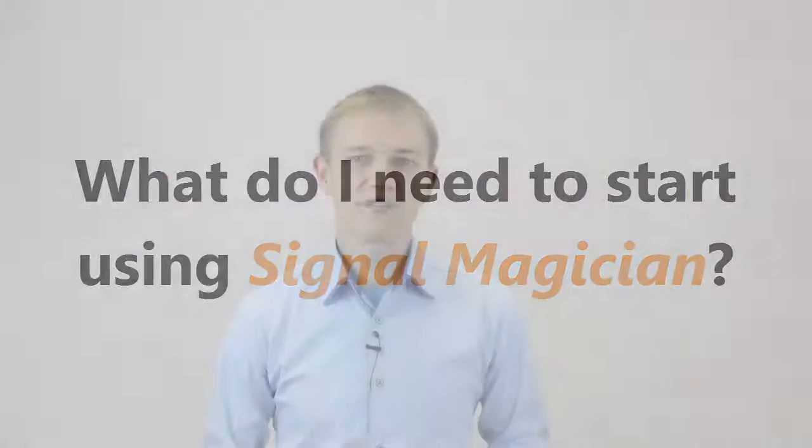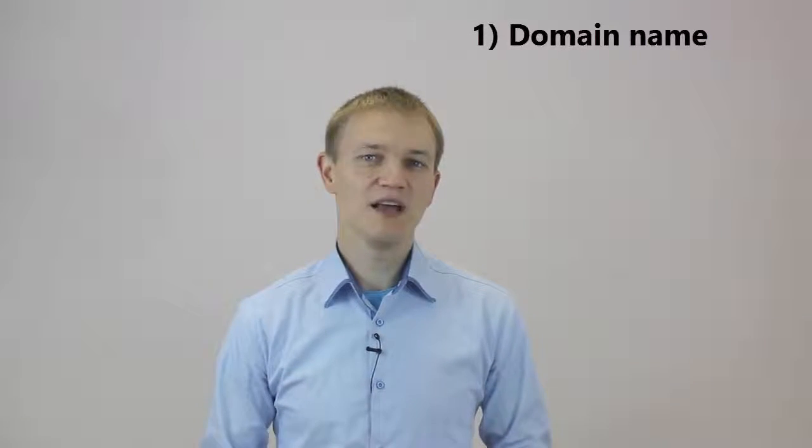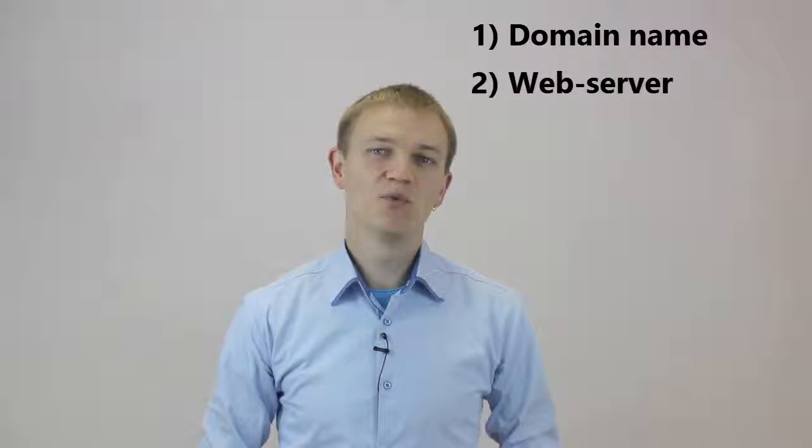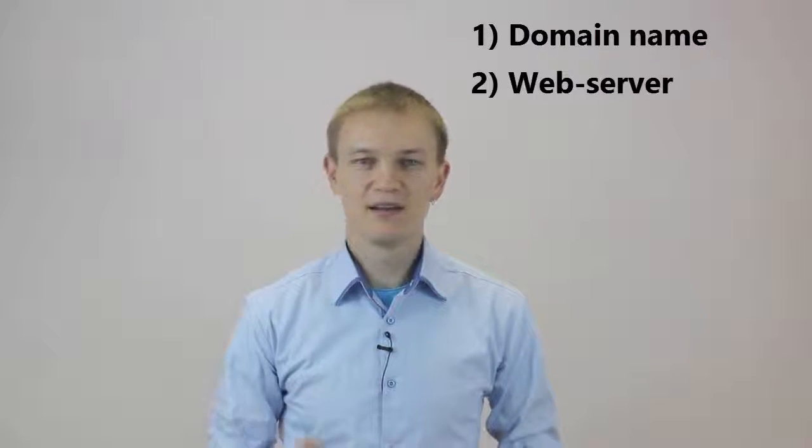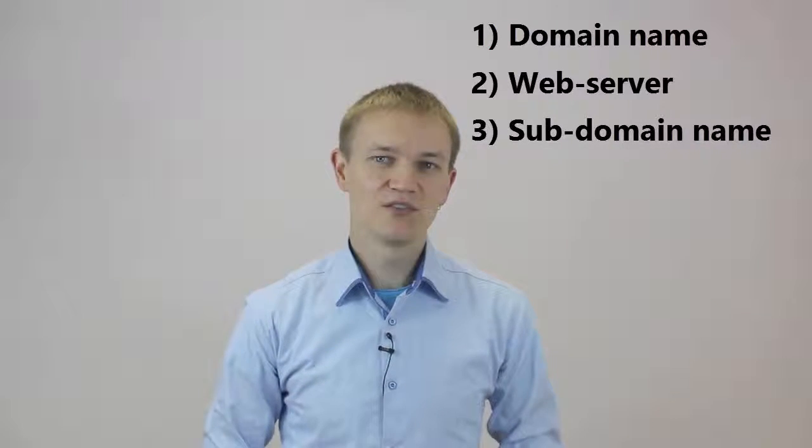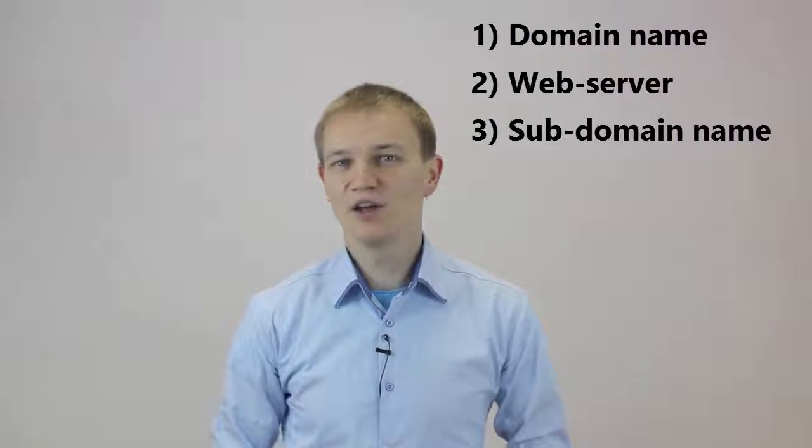You'll need these five main things. First, a domain name for your business. It's an internet address where people can access your service, for example, vavatrade.com. Second, a web server where you'll have to install your Signal Magician control panel. Third, a subdomain for your Signal Magician license. This is where your clients can log in to the control panel, for example, members.vavatrade.com.